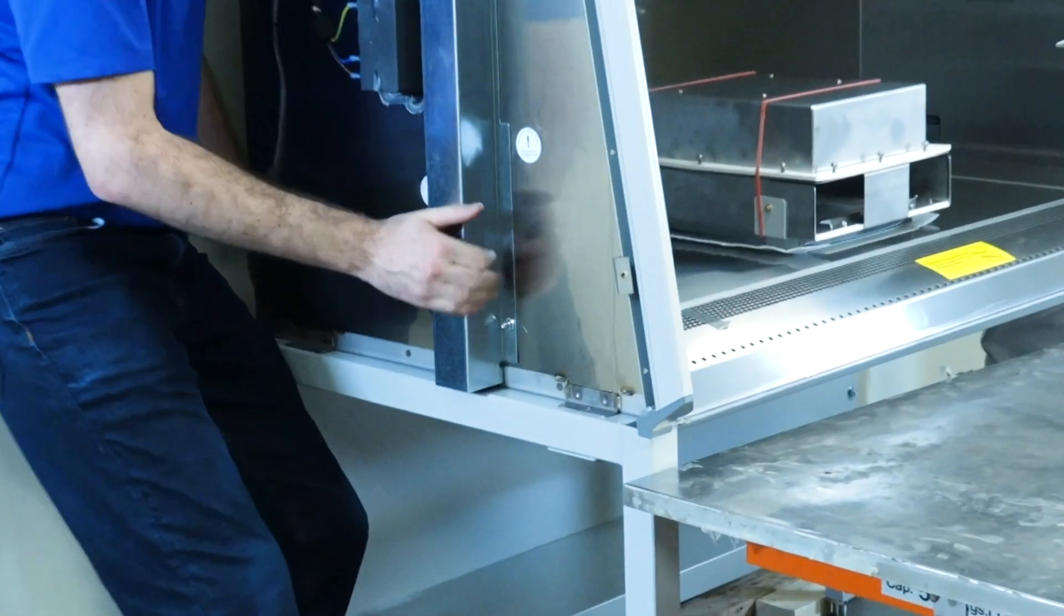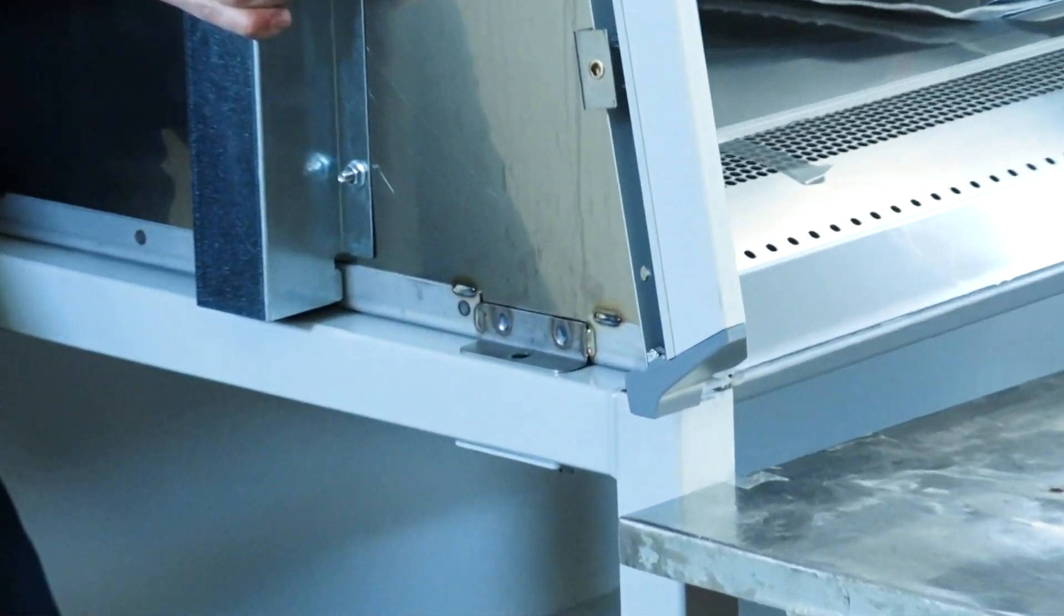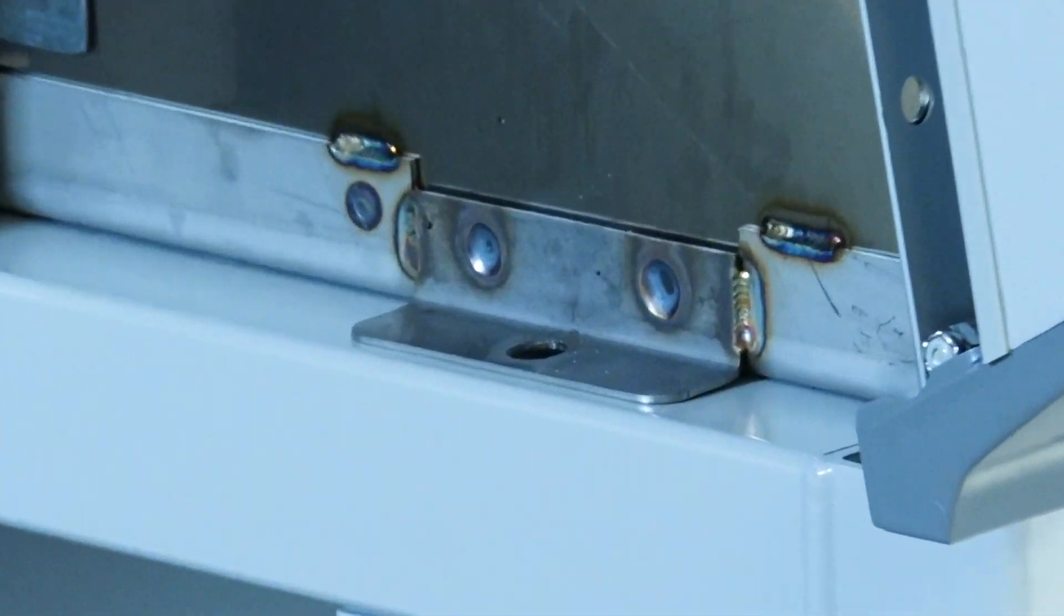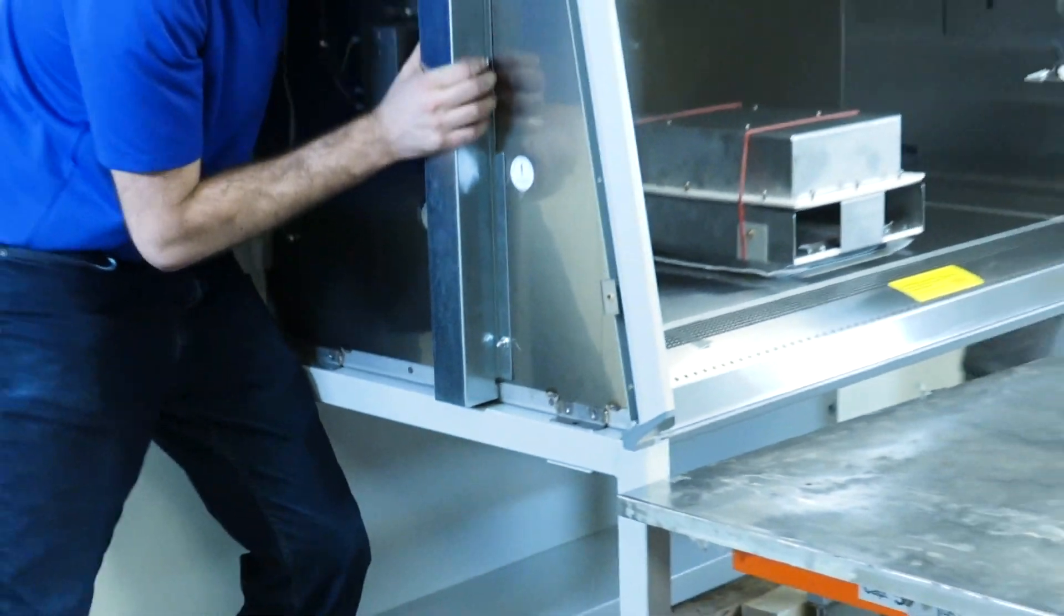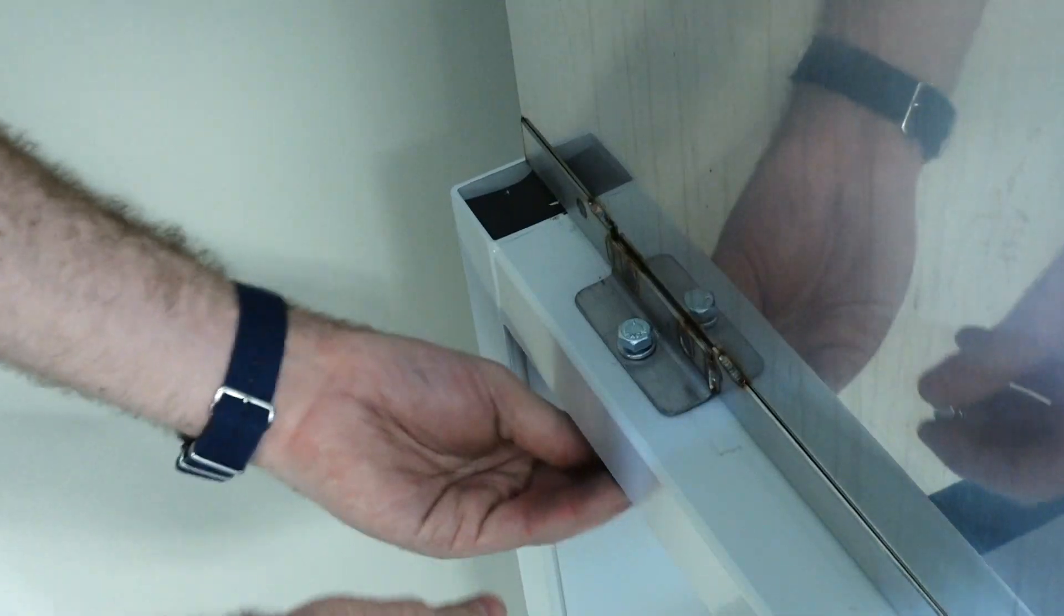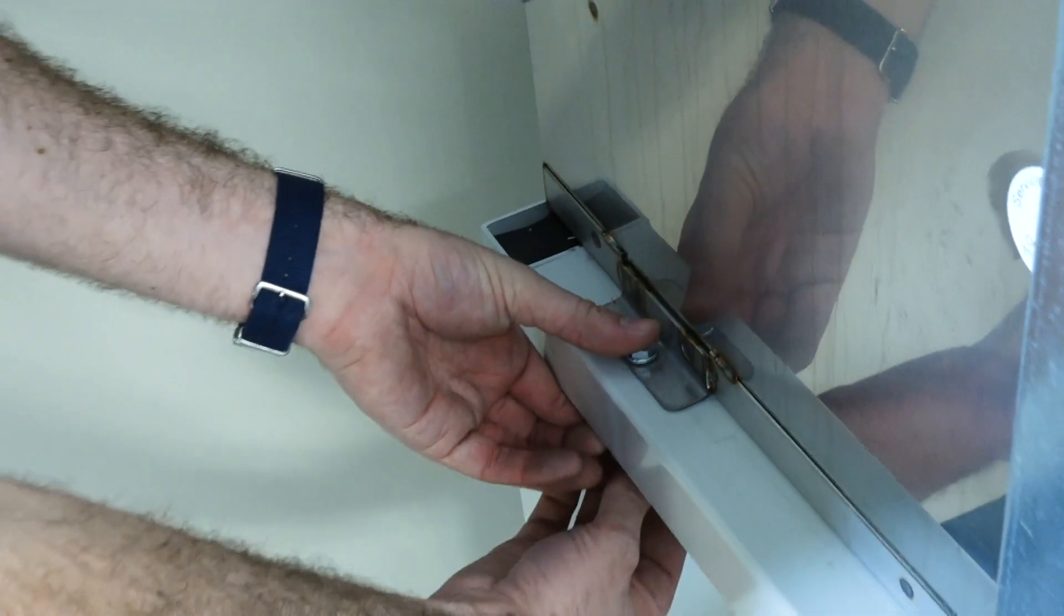Next, line up the mounting holes of the stand with the mounting holes used to secure the biosafety cabinet during shipping. Secure it to the base stand using the four bolts that mounted it to the shipping pallet.